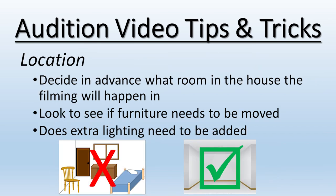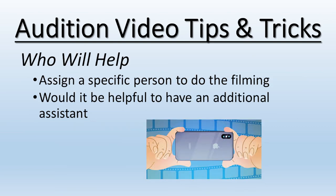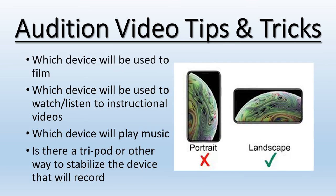Pick a location in the house that provides you with the space and lighting that you need. Decide in advance who will be in charge of filming and who will be able to help you create your YouTube link that Paula just spoke about. Know which devices you will use to film, which one will play the video, and if you need an additional one to play music. Many times you cannot play music from a device at the same time you are using it to film.